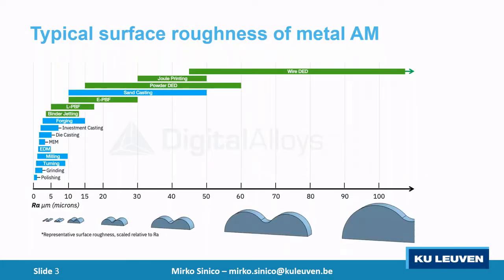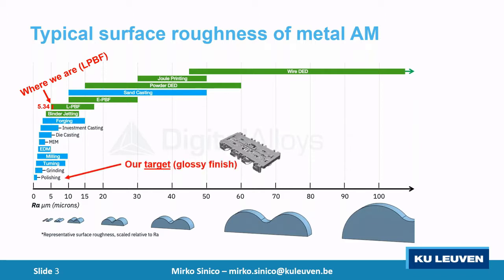At 5-point-something microns minimum Ra, we are way better than before with the standard powder, but still within the laser powder bed fusion range. Our target was glossy finish — we will never reach that by LPBF alone — but if we can reduce below two or three microns Ra, we can skip one or two post-processing steps and save time and money for our specific application, the metallic mold insert. So, is there a way to go below two microns Ra for the top surface?